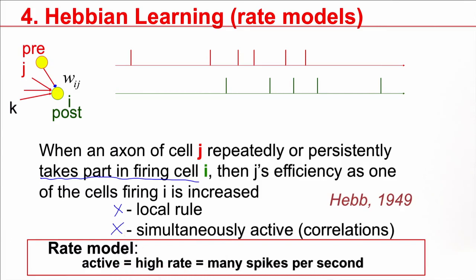To formulate this mathematically, we will work with a rate model. And rate model means we just talk about a firing rate, which is number of spikes, the rate mu, number of spikes divided by some time window T, which is this interval here. So let's formulate rate models of Hebbian learning.